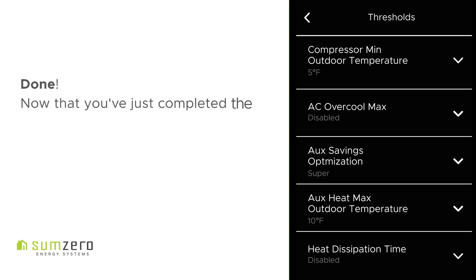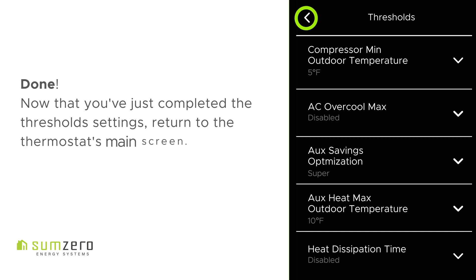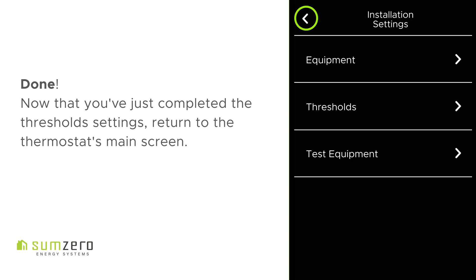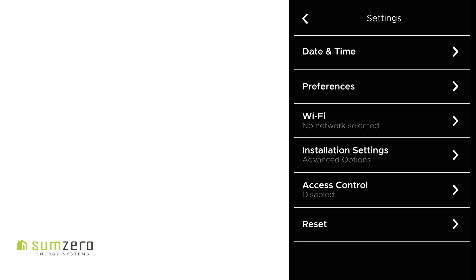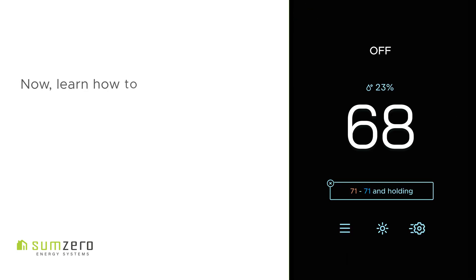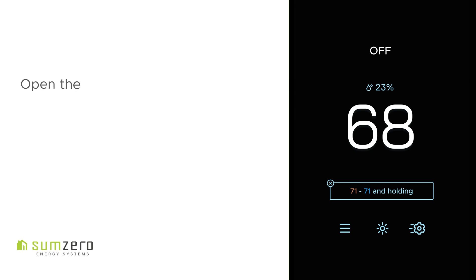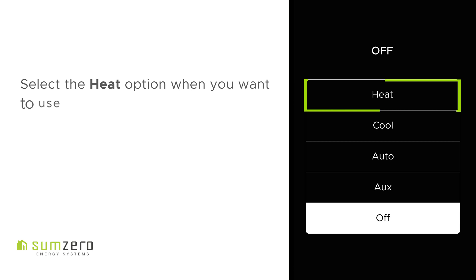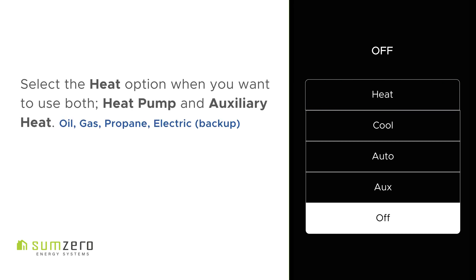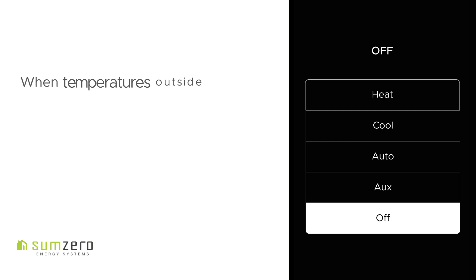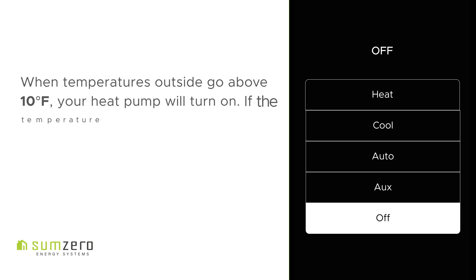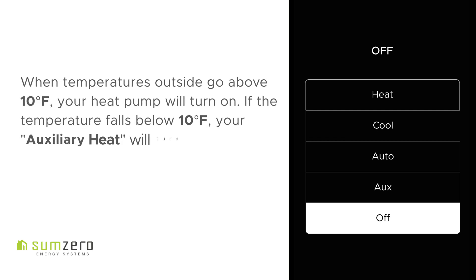Now that you've just completed the threshold settings, return to the thermostat's main screen. Now, learn how to operate systems with thresholds. From the main screen, open the Selection menu. Select the Heat option when you want to use both Heat Pump and Auxiliary Heat. When temperatures outside go above 10 degrees Fahrenheit, your heat pump will turn on. If the temperature falls below 10 degrees Fahrenheit, your auxiliary heat will turn on.